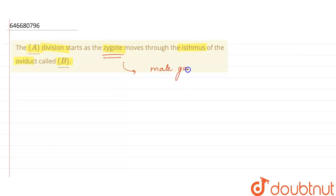...male gamete, which is the sperm, fuses with the female gamete, which is the ovum. Okay, and they fuse together to form a diploid zygote.